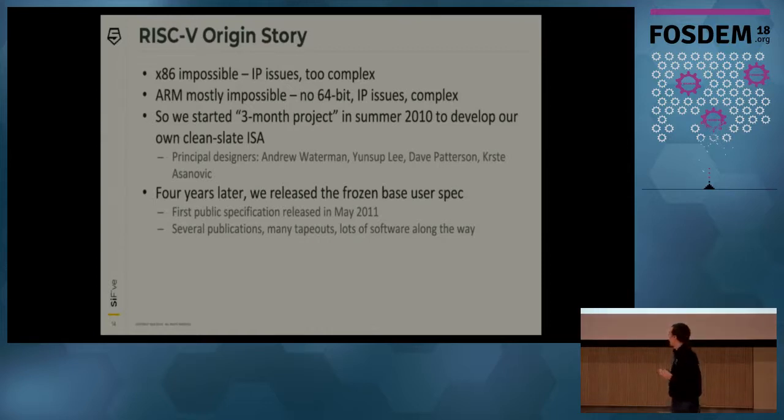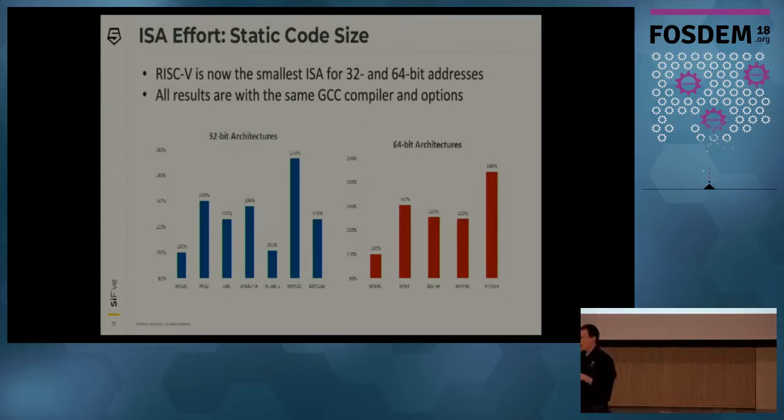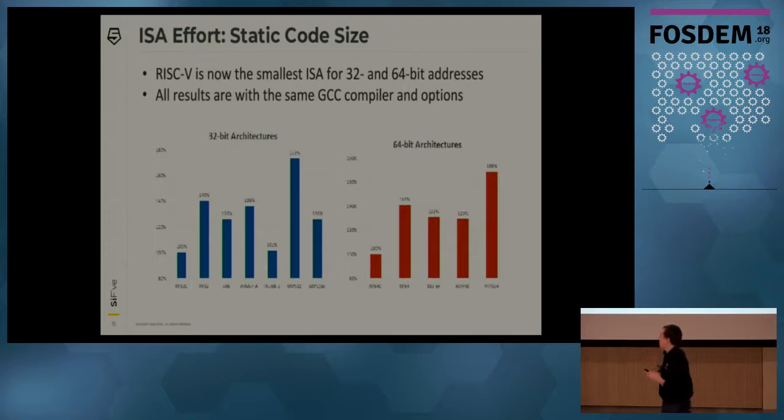x86 and ARM really aren't viable. At the time, we started a three-month-long summer research project to design our own ISA. Four years later, we managed to actually release the base user ISA specification. That was frozen. Of course, it took us four years because we were doing a lot of things in the meantime. We were taping out chips, and we spent a lot of time working on the ISA. We are quite confident that it's the best ISA because we have lots of metrics for it.